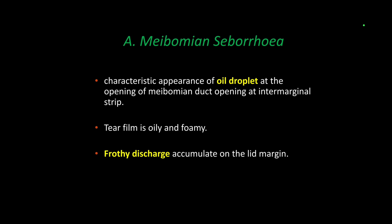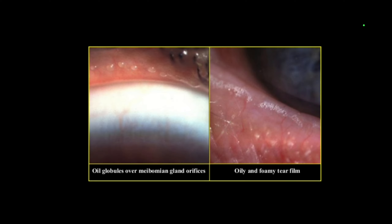There are two clinical forms. First, meibomian seborrhea. It has a characteristic appearance of an oil droplet at the opening of the meibomian duct. The tear film is oily and foamy, and frothy discharge accumulates at the lid margin. In this picture you can see the oil droplet at the opening of the meibomian duct, and on the other side you can see an early foamy tear film. This froth is made due to a chemical reaction similar to the formation of soap.